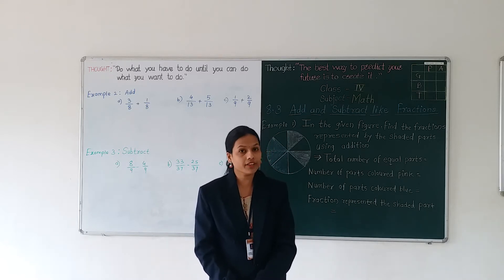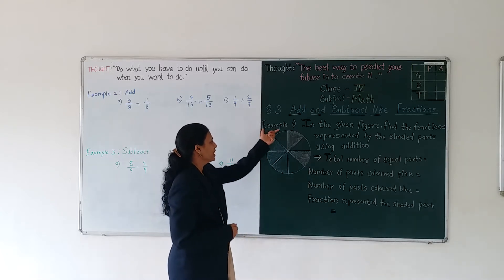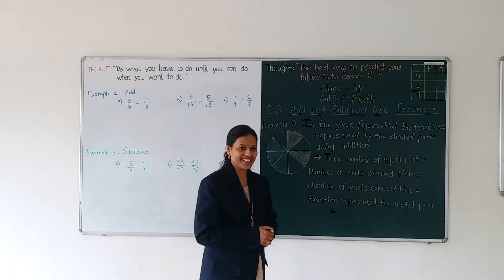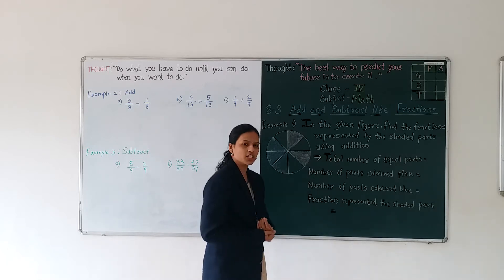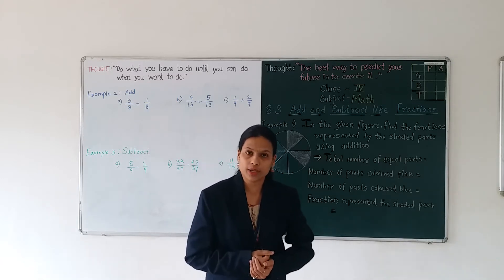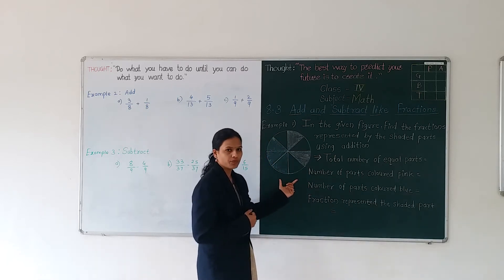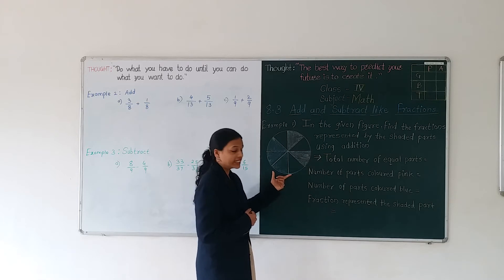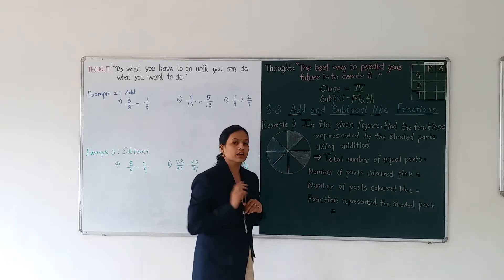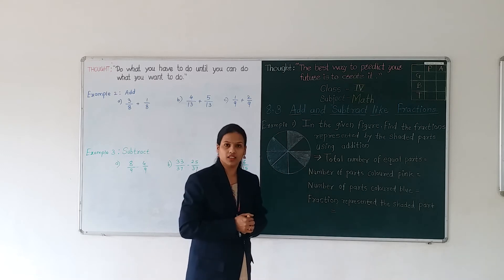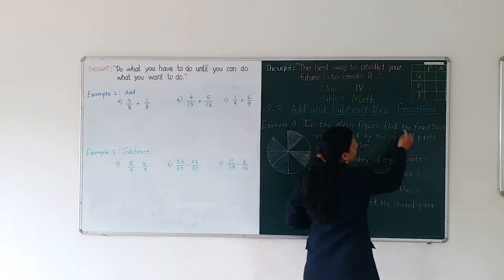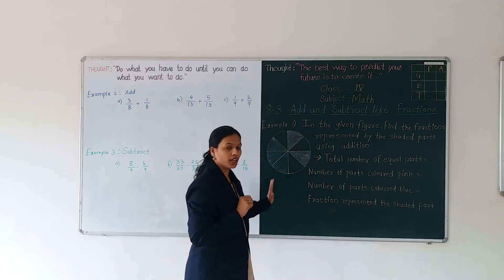Shall we see in brief? I have an example. Can you see this figure? We have one whole — you can take a square shape or any shape. I have taken one circle, one whole. If you can see carefully, this circle is divided equally into some parts. From this, I have shaded some parts with a pink color and some parts with a blue color. In the given figure, find the fractions represented by the shaded parts.